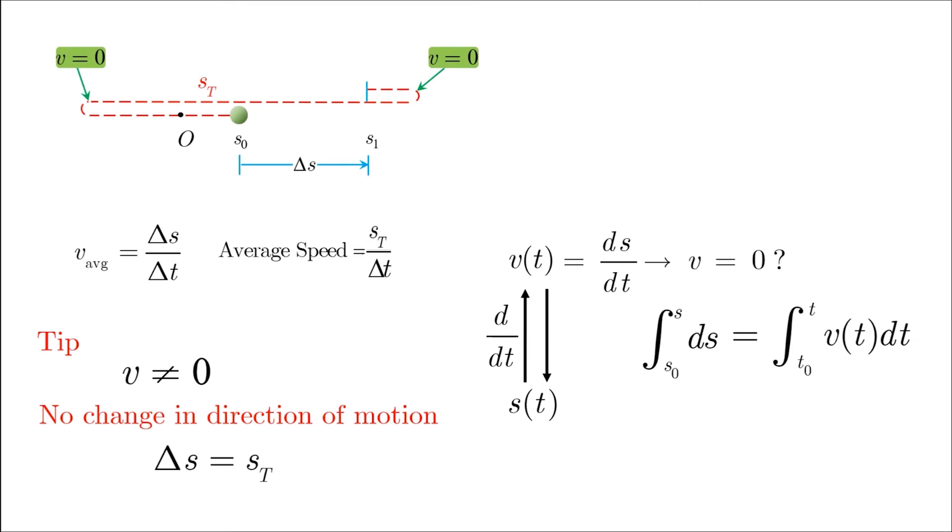If instead, the function given in the question is a of t, you need to integrate a of t to find v of t and follow exactly the same process as before. In this case, all initial conditions v_0, t_0 and s_0 should be given to you in the problem.